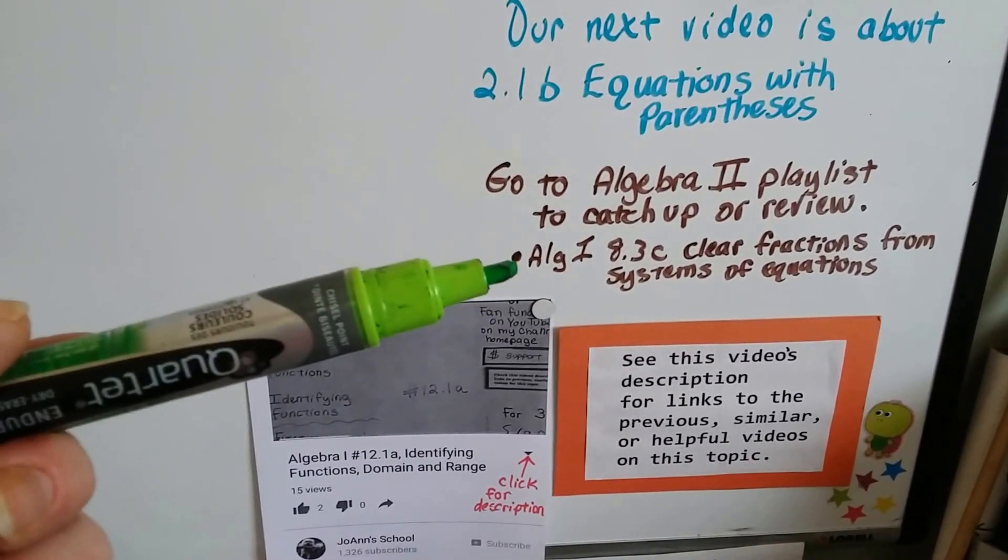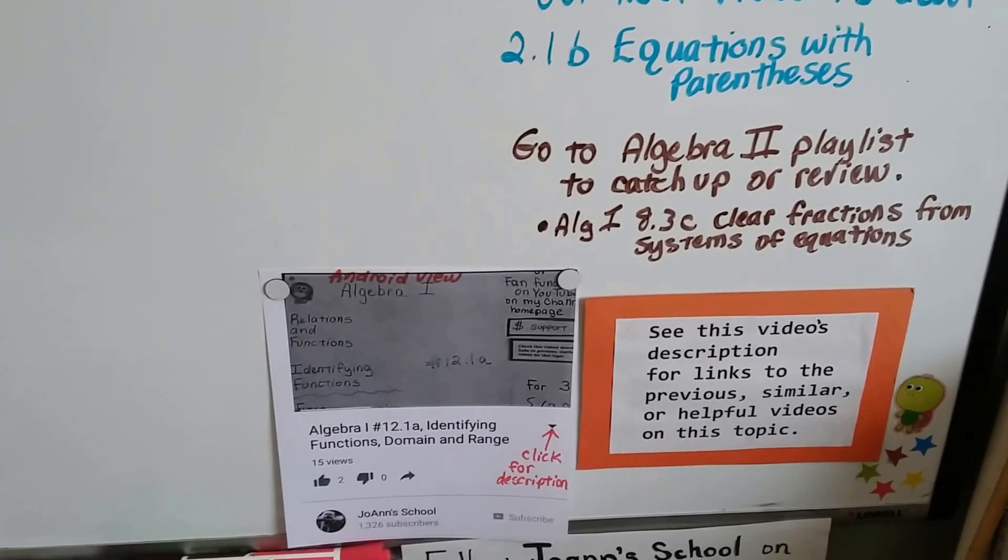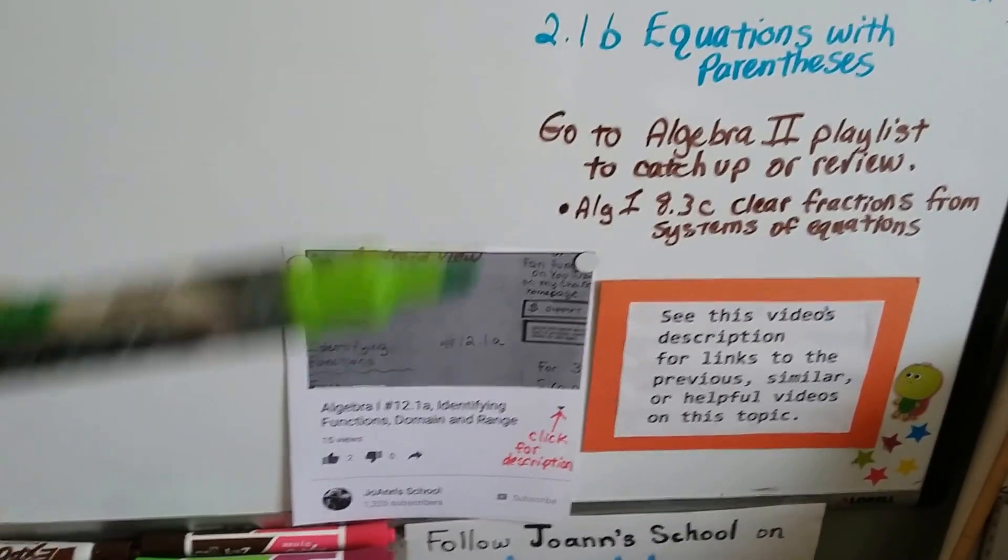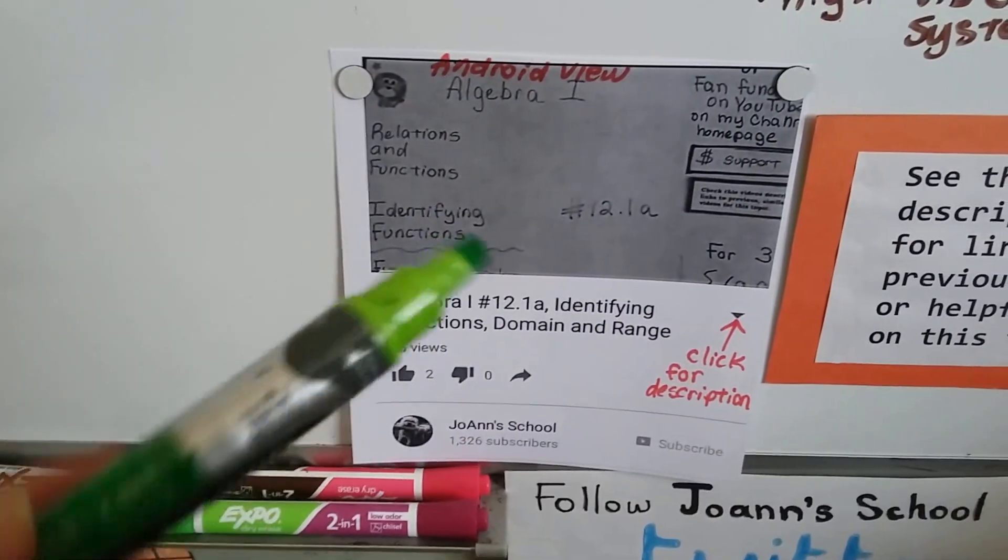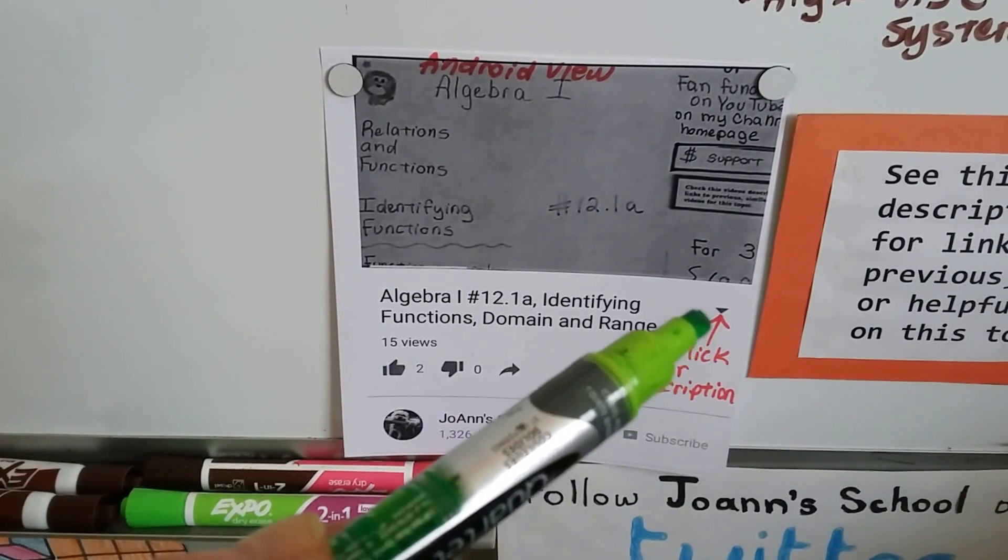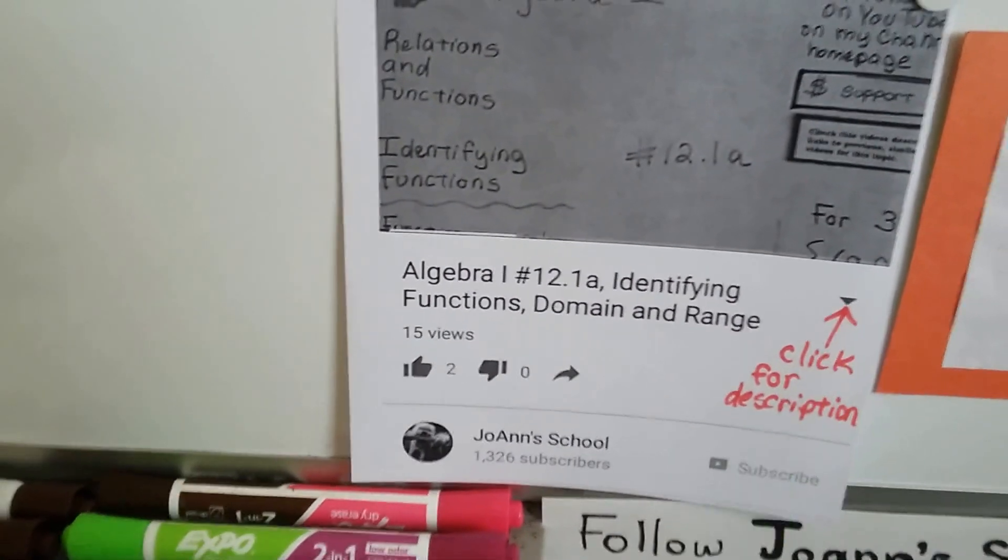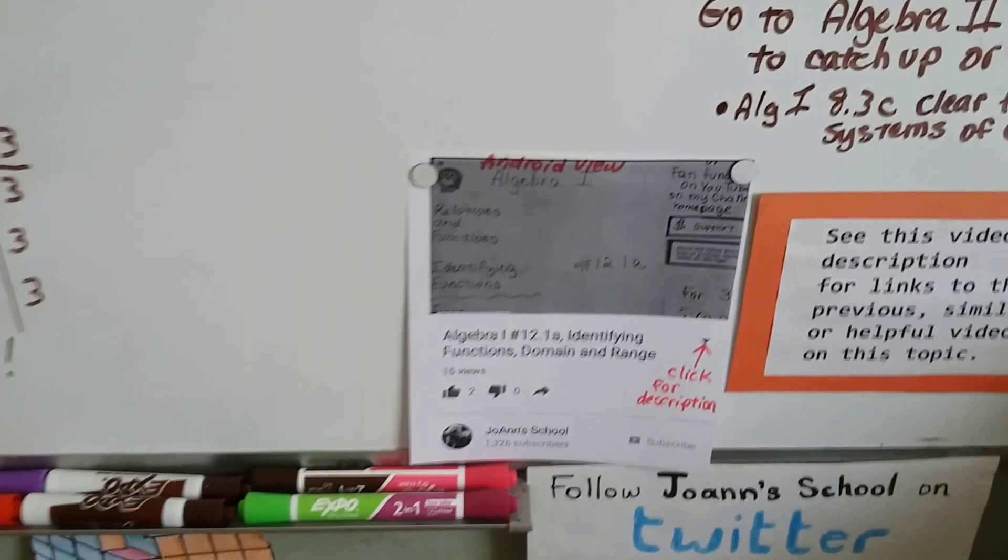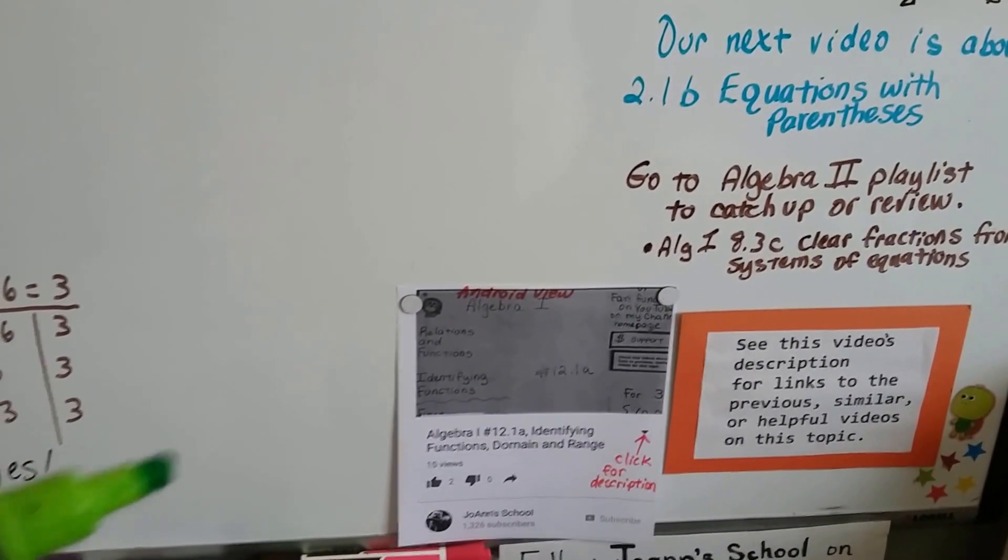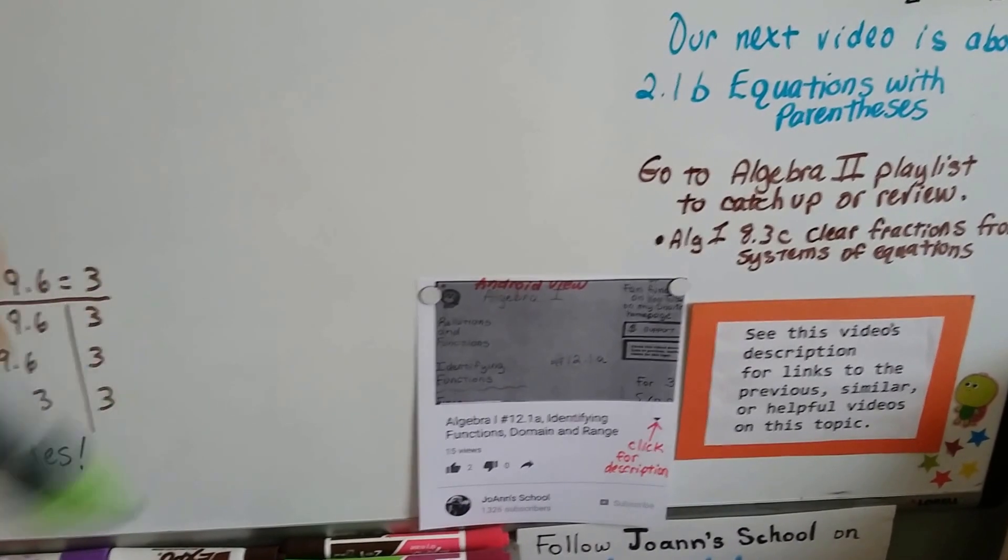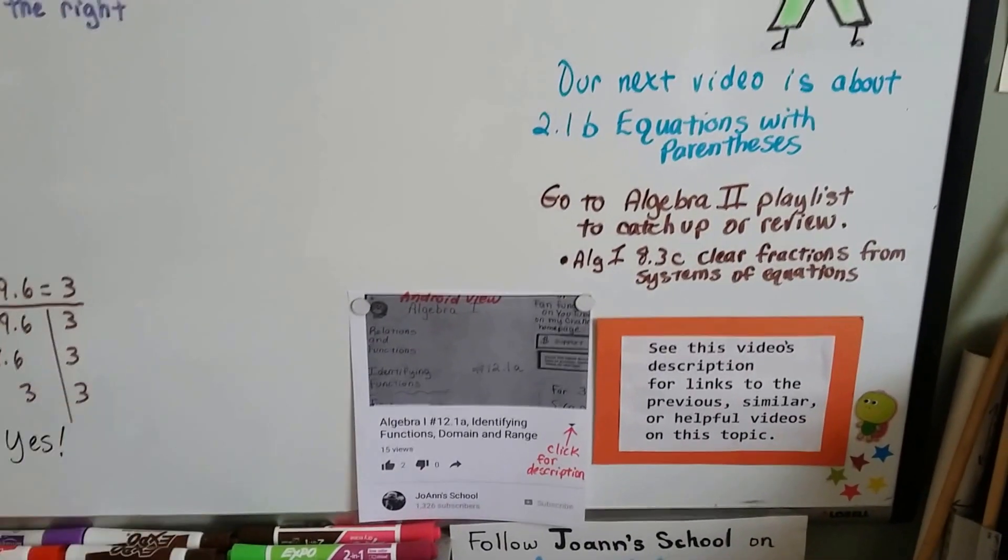There's also going to be a link to the Algebra 1, 8.3c, where we talked about clearing fractions from systems of equations back in Algebra 1. Now, if you're really lost about finding the description of this video and you're on an Android, when you look at the video, there's a little triangle here. You're going to see this little downward triangle. And if you touch that, the whole description is going to open up and you'll see all the links. If you're on a laptop or a regular computer, you can see it and just click See More. There's a little thing that says See More, and then you can just click on that and it'll all open up.